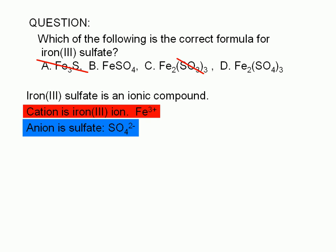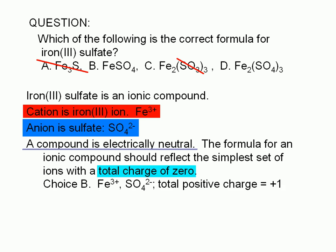So how do we decide between choices B and D? A compound is electrically neutral. The formula for an ionic compound should reflect the simplest set of ions with a total charge of 0. Choice B would imply a total charge of plus 1. The formula in choice B implies one iron-3 ion with a charge of plus 3, and one sulfate ion with a charge of negative 2. The sum of positive 3 and negative 2 is positive 1, which is not right.